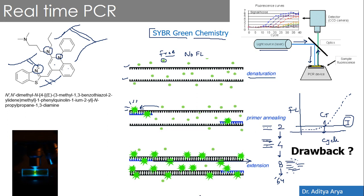A drawback of SYBR Green is that it is not sequence-specific. Even if non-specific amplification occurs — any other DNA molecule being amplified — you will get a similar fluorescence pattern. Just by looking at the amplification curve, you cannot tell whether your DNA of interest or some random DNA is being amplified. This is why people explored different chemistries. The advantage of SYBR Green is that it is highly cost-effective compared to other methods, and this drawback can be partly addressed through melt curve analysis.